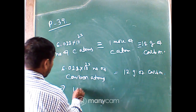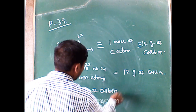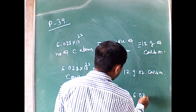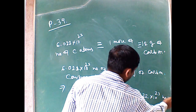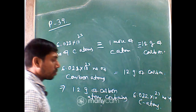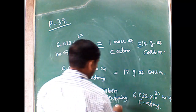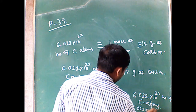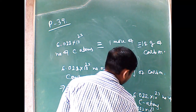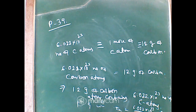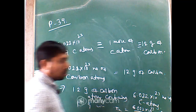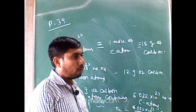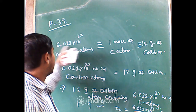We can write: 12 grams of carbon contains 6.022 × 10²³ number of carbon atoms. From that, 1 gram of carbon contains 6.022 × 10²³ ÷ 12 number of carbon atoms. This equation will help you calculate problems regarding the mole concept, because the gram atom, the molecular mass, and the number of atoms can all be related by Avogadro's number.